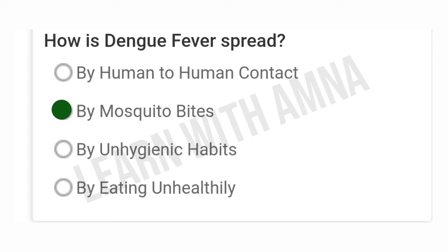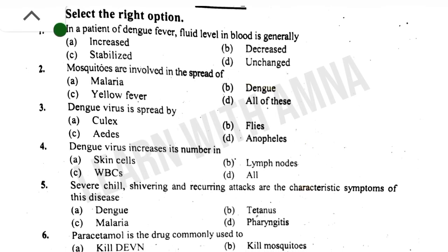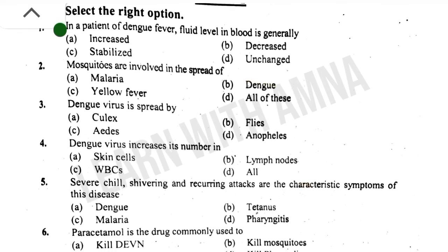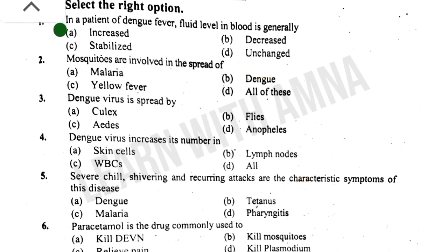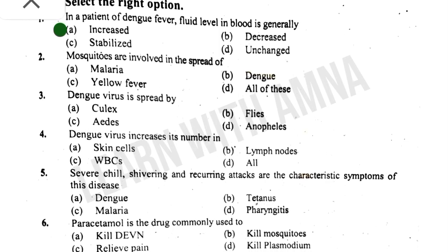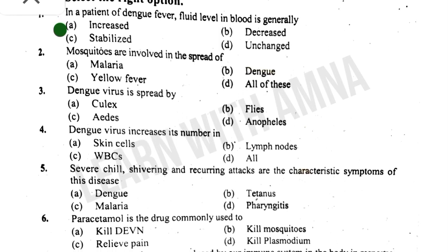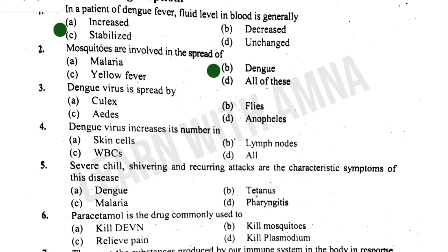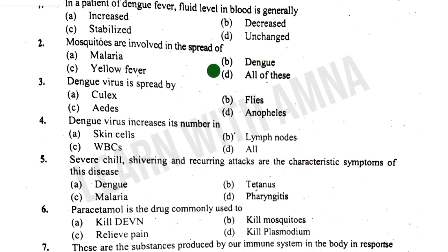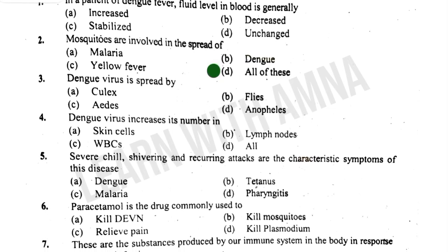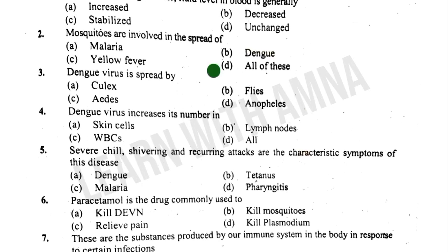In a patient with dengue fever, fluid level in blood is generally — A) Increased. B) Decreased. C) Stabilized. D) Unchanged. The correct answer is B. Number two: Mosquitoes are involved in the spread of — A) Malaria. B) Dengue. C) Yellow fever. D) All of these. The correct answer is D.